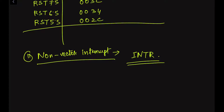When INTR goes high, the microprocessor suspends the execution of its normal sequence of instructions. After completing the ongoing or current instruction, it attends the interrupting device. The microprocessor then sends the INTA signal, which is the interrupt acknowledgement signal.